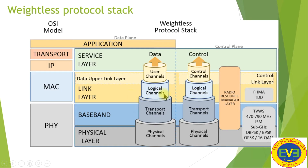The link layer contains logical channels, and the data upper link layer has MAC. Both link and data are part of MAC. There are user channels and control channels. Above that is the service layer. These are the Weightless protocol stack layers. The control link layer uses FHMA, KDDD, and TVWS — this is the bandwidth used in the Weightless protocol.